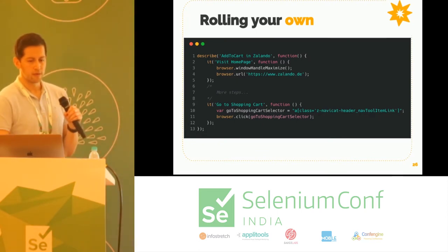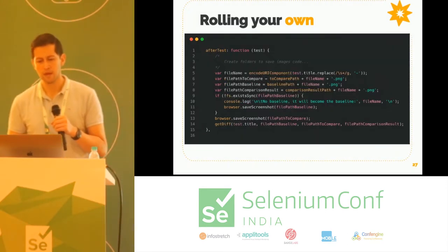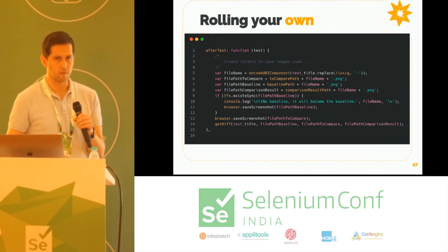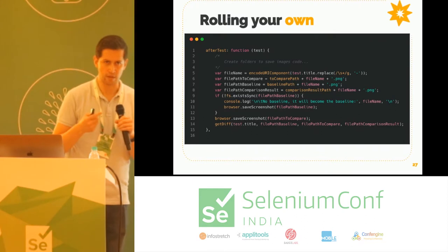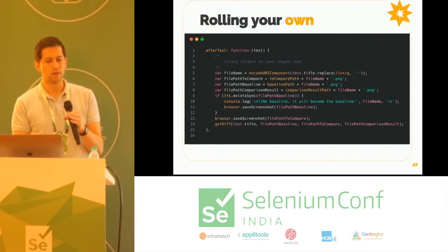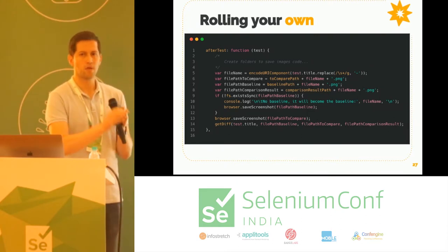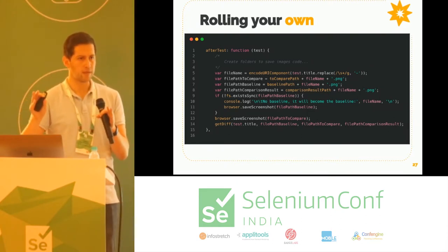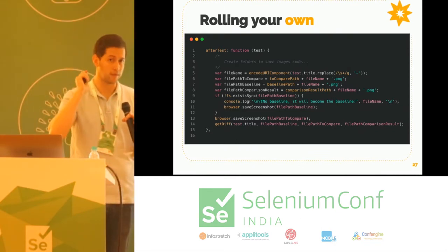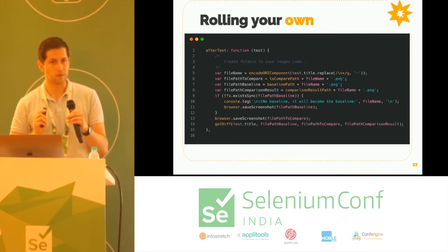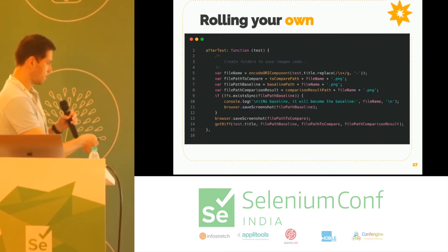This is the normal test like we saw in the video. WebDriver.io, like many other frameworks, has hooks to do something after the test and after every check. What we were doing is: we take the screenshot, take the file used as the baseline, and pass both as parameters to a JavaScript image comparison library we found on GitHub.